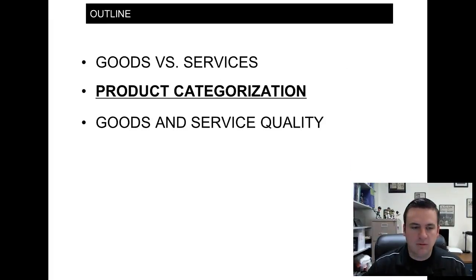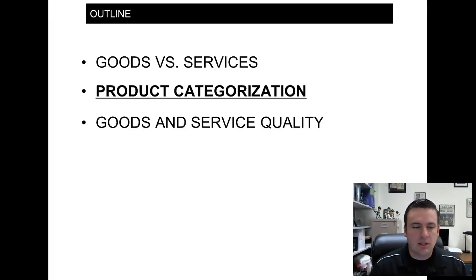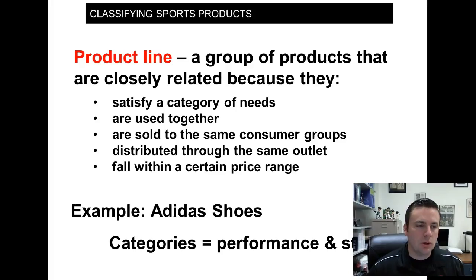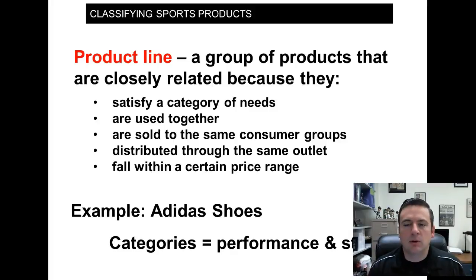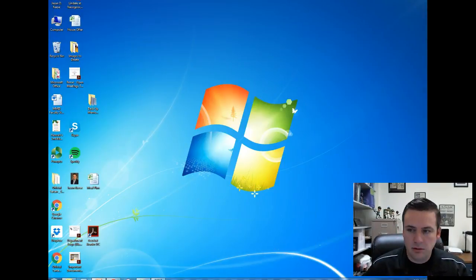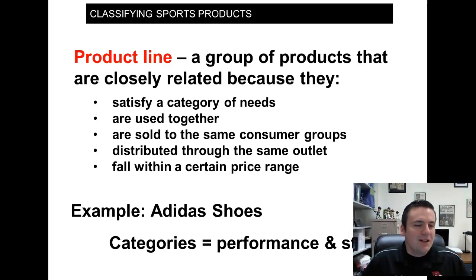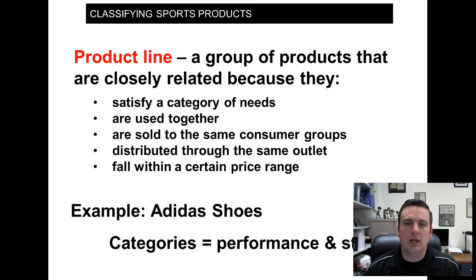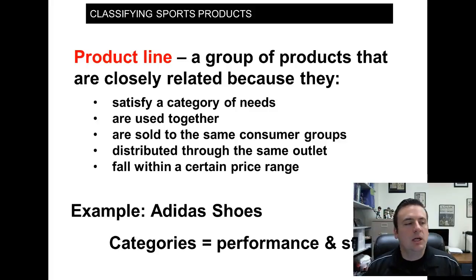In the second part of Chapter 7, we'll talk about product categorization and goods and services quality. When we look at products, we classify them in several different ways. I wanted to point out several ways in which we look at products and some terminology you might hear if you end up in the industry dealing with different products.